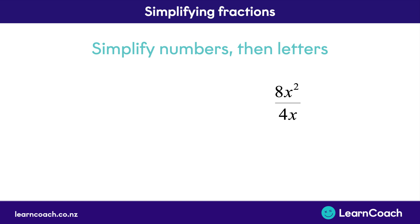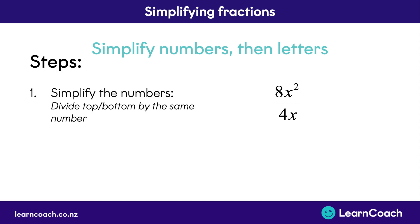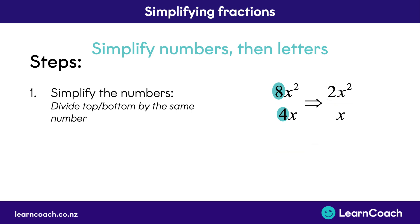The first thing you need to do is simplify any numbers. So we've got 8 over 4 in this case. 8 over 4 means the same as 8 divided by 4. So we can simplify these two numbers to just be 2, because 8 divided by 4 equals 2. And that's step 1 complete.